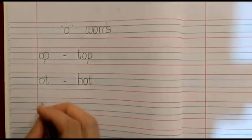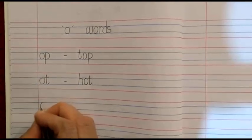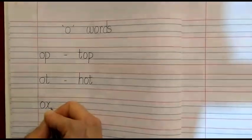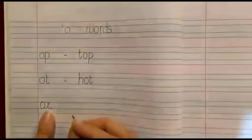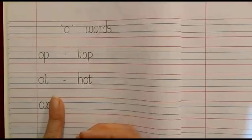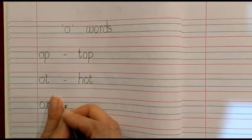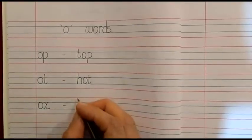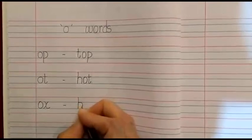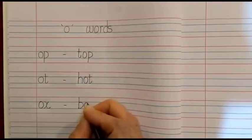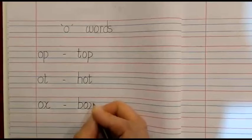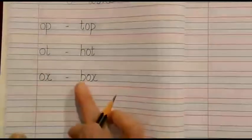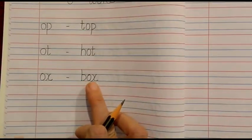Then we will write another O family word: Ox. Please read it — Ox. After writing Ox, we are going to place our index finger, then one dash, then again place our index finger, and we will write the word: B, Ox — Box. Read it: Bo, Ox — Box.